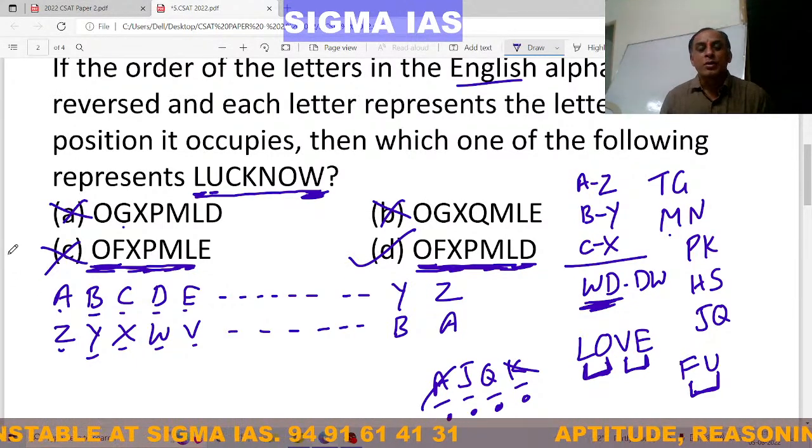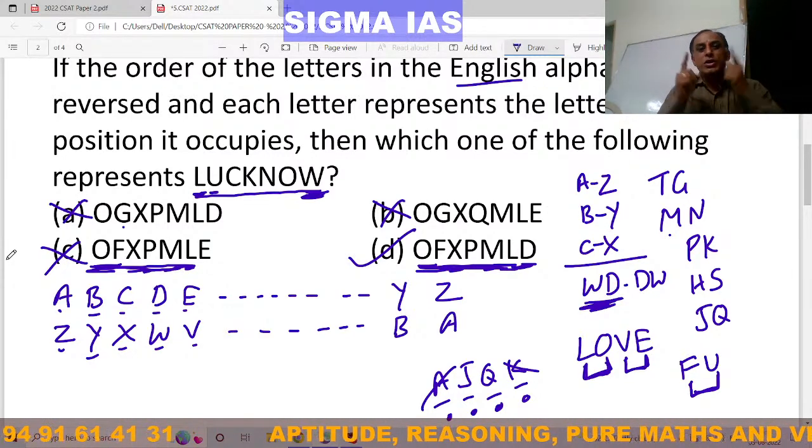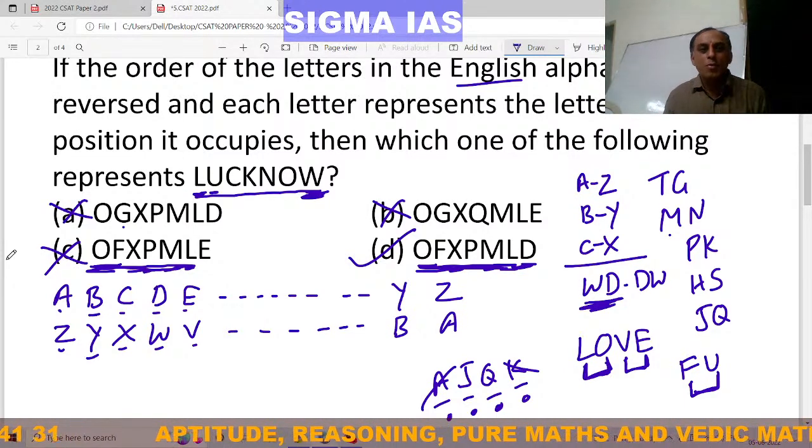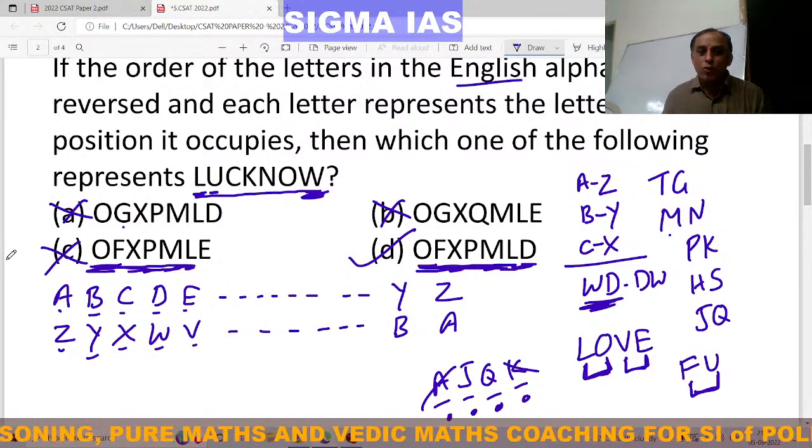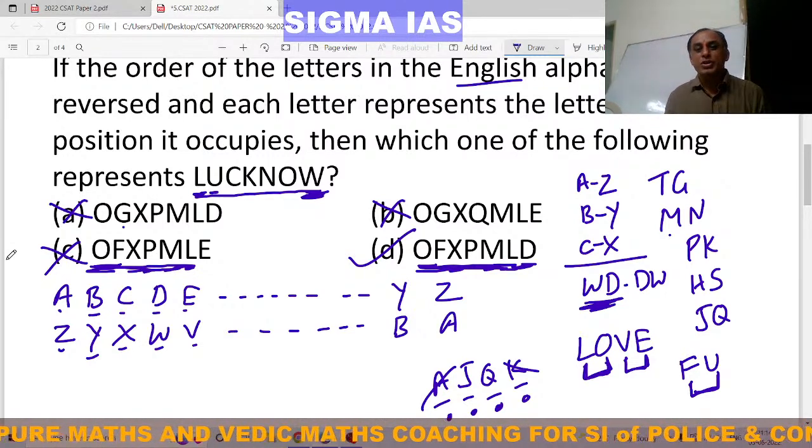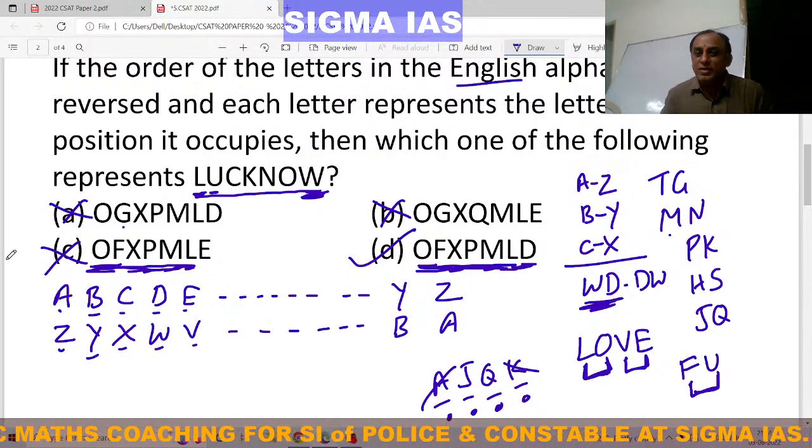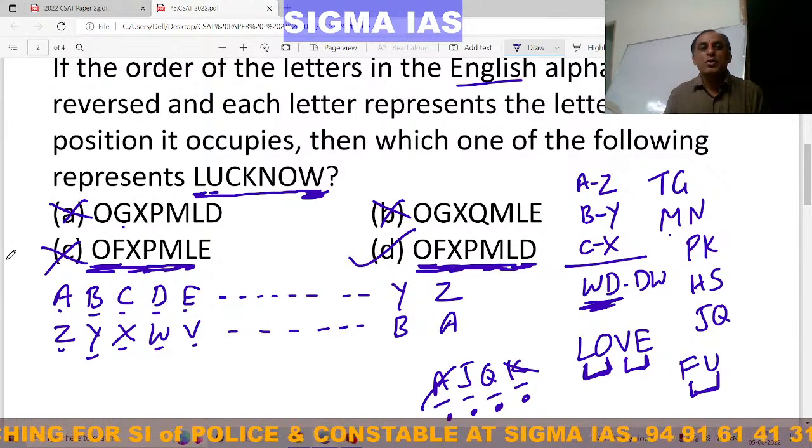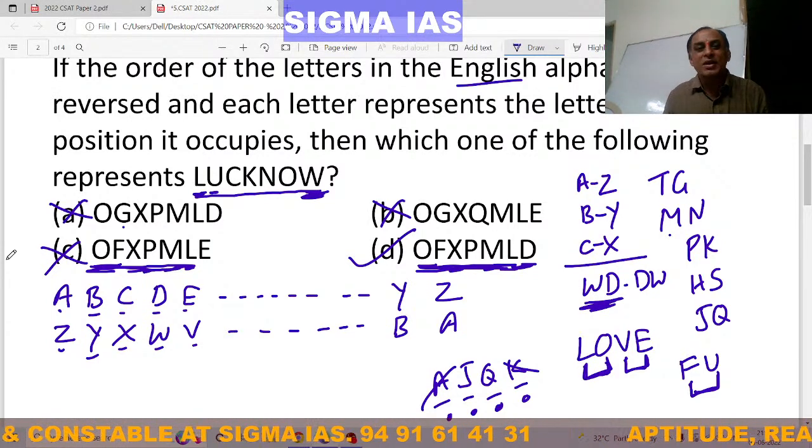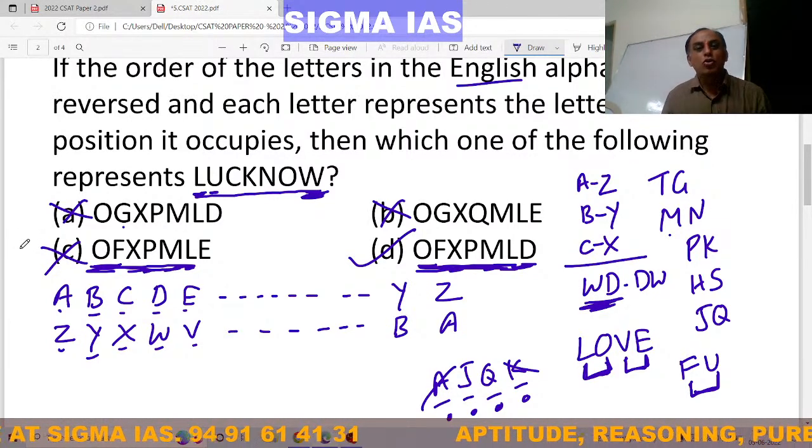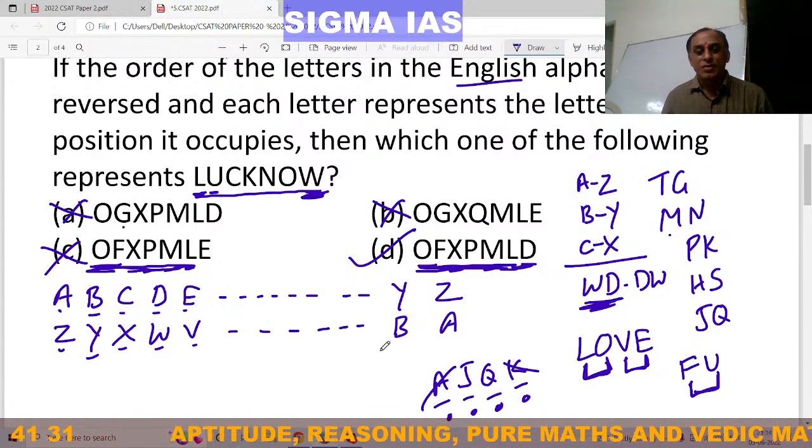It is coding and decoding. So coding and decoding depends on English alphabets only. In each and every examination, minimum one or two questions will cover from coding and decoding. Okay my dear friends. And today only I will upload each and every question explanation in our WhatsApp group. 2022 Civil Services CSAT Paper 2, Aptitude and Reasoning Part. Total explanation will be available in our YouTube channel Sigma IAS. And please share this video to your friends who are preparing for Civil Services Examination. Thank you.